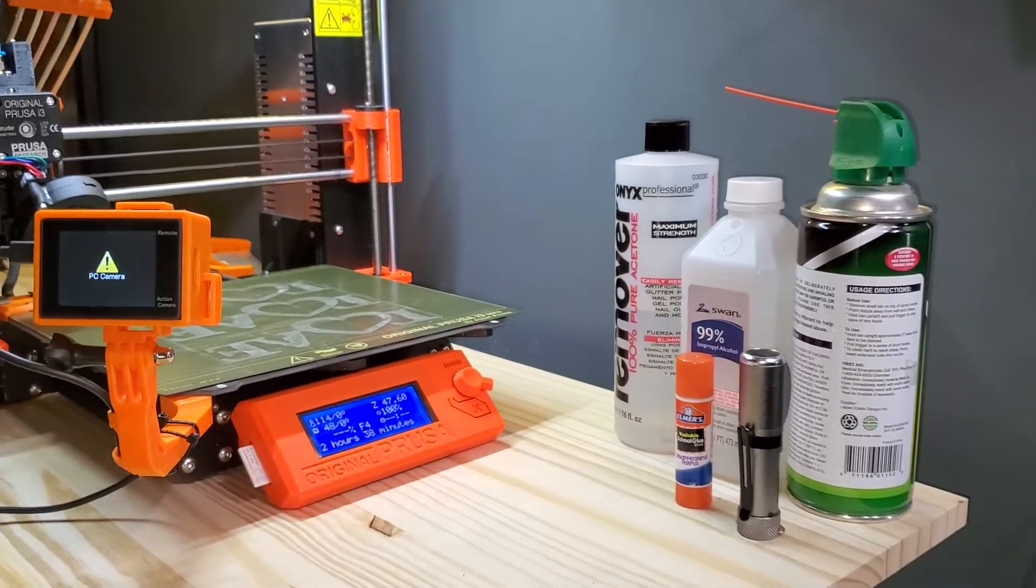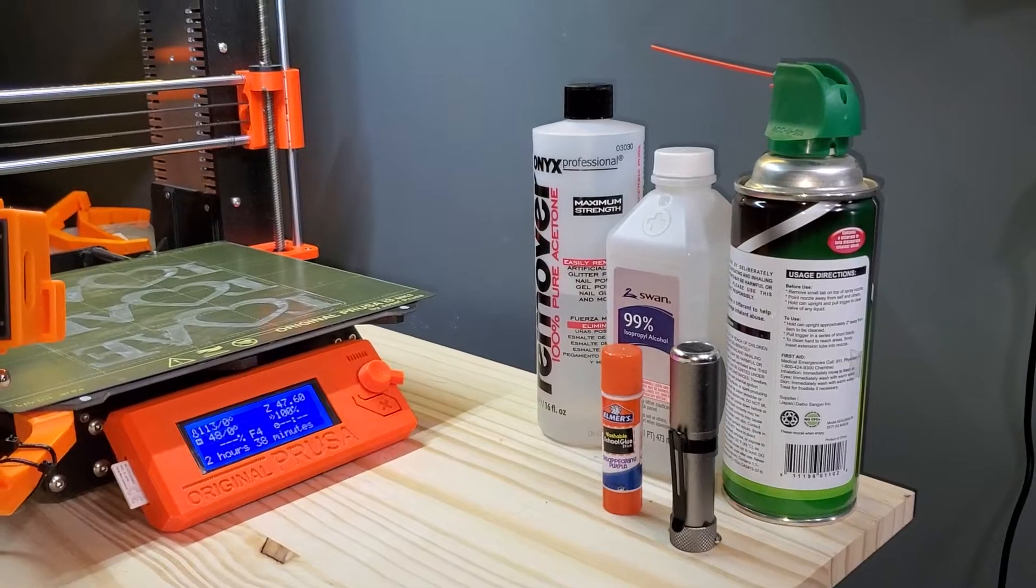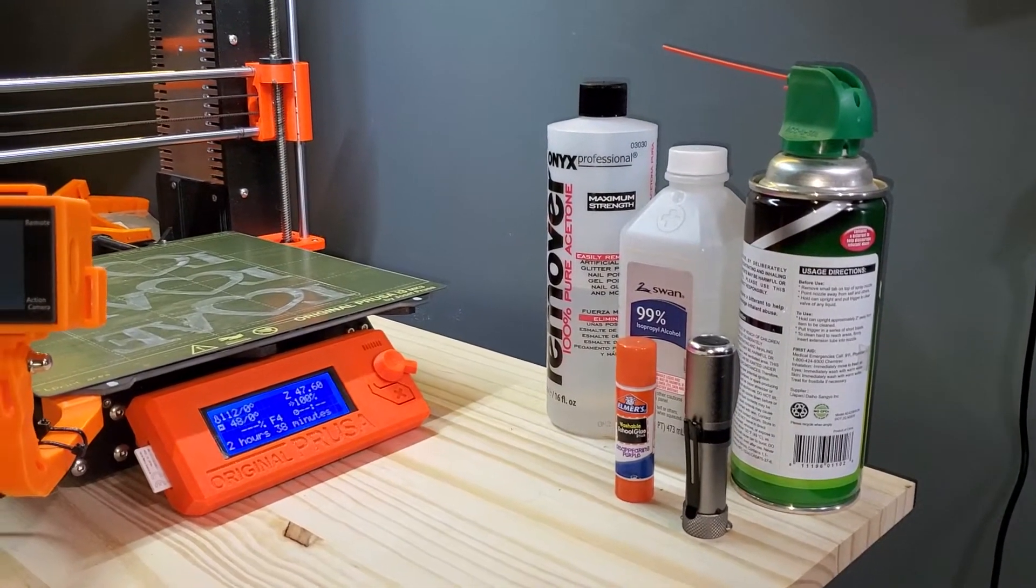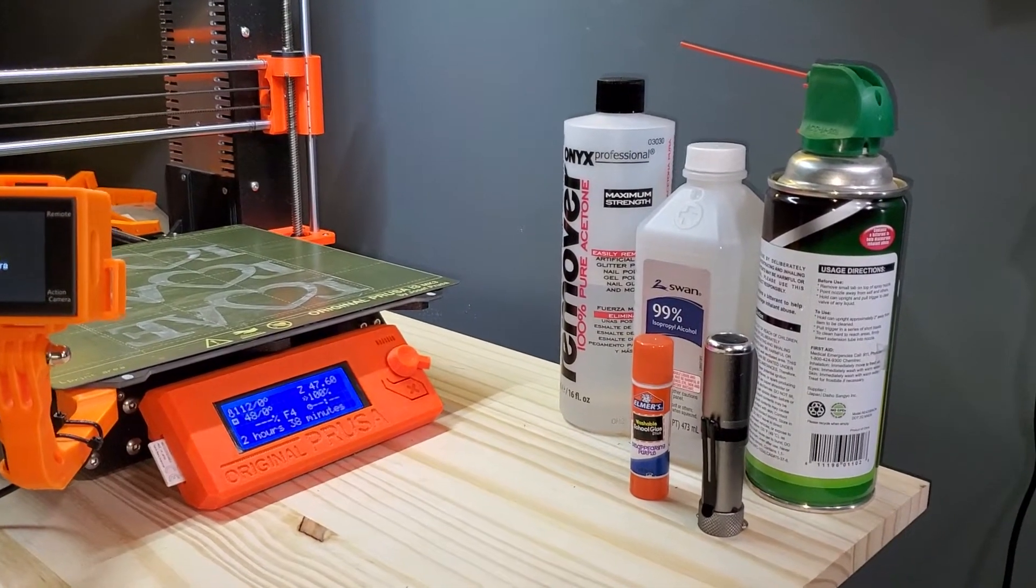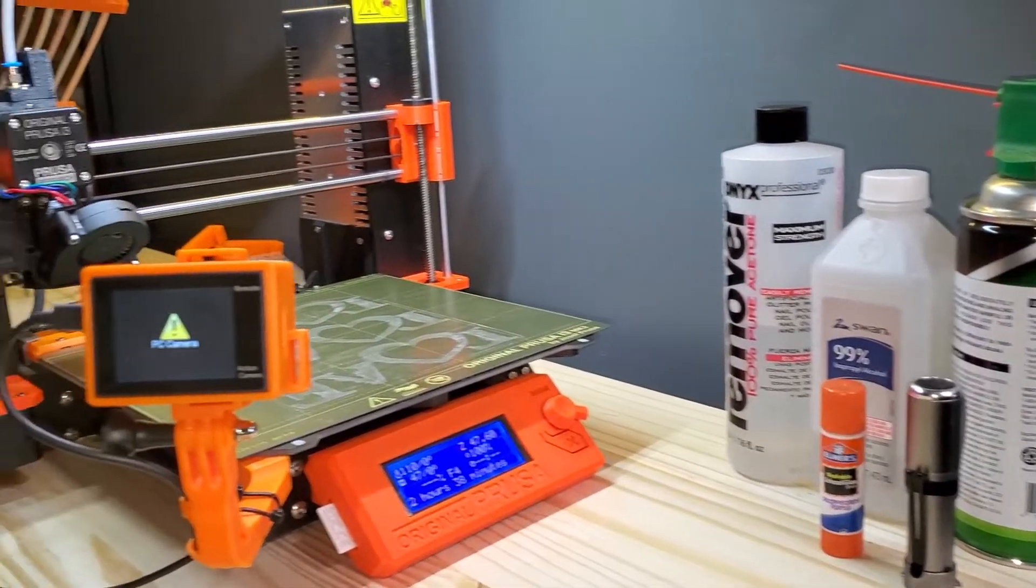So here's my current setup. I've got a flashlight glue if needed, especially for ABS. I have my isopropyl alcohol, my 100% acetone, a duster in case I need to dust out the MMU2.